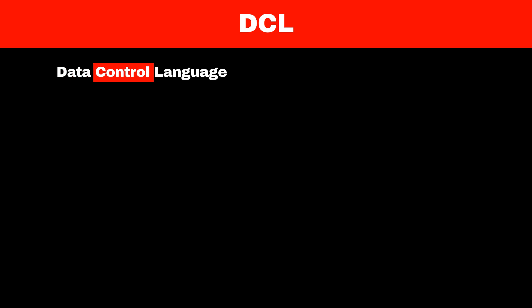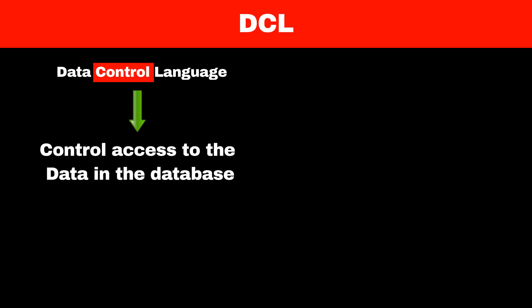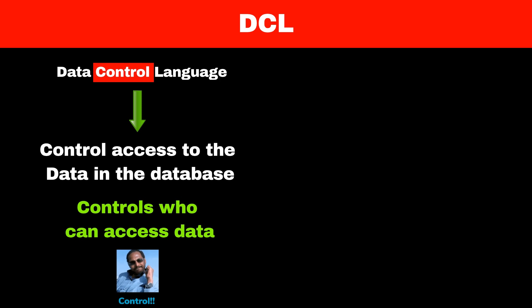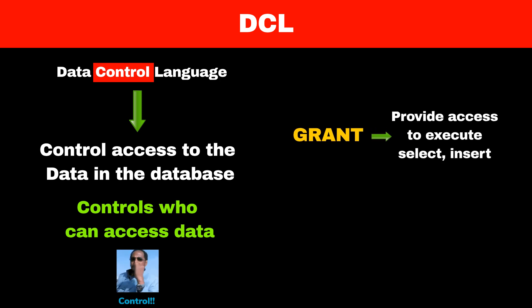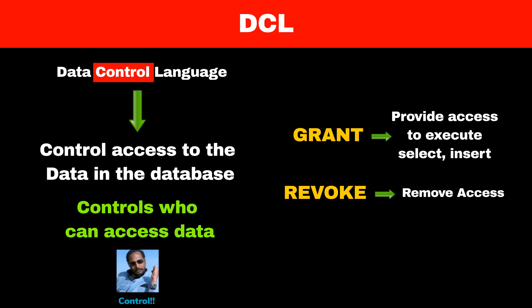The last category is DCL commands. DCL stands for Data Control Language. As the name suggests, these commands are used to control access to the data in the database. These commands also manage who can access and manipulate the data and structure within the table. For example, the grant command is used to give permission to a user to perform actions like select or insert on the database. On the other hand, the revoke command withdraws the access privileges or permissions given by the grant command.